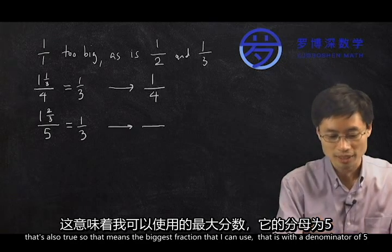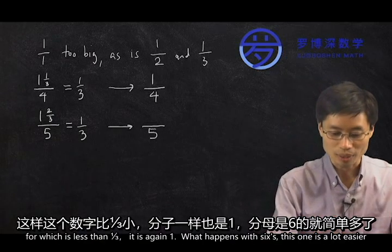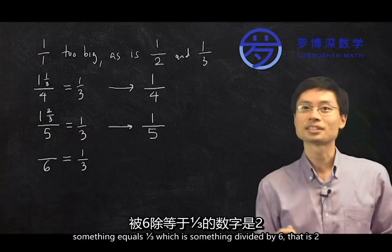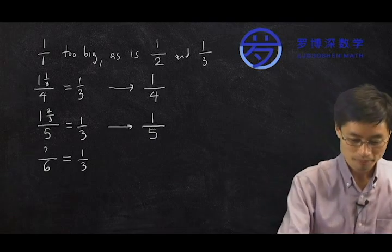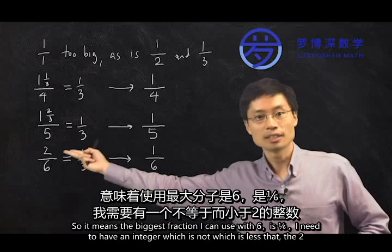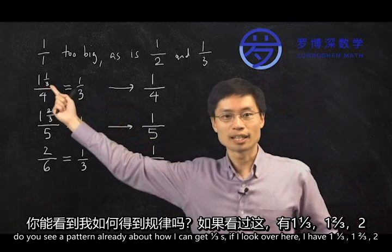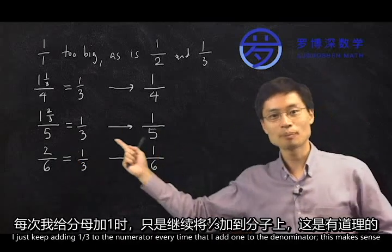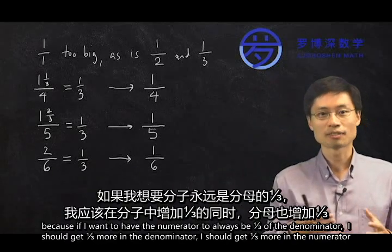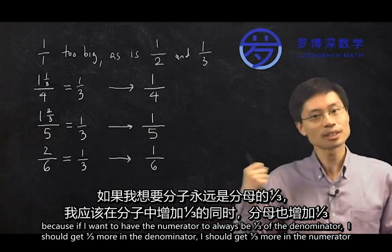So the biggest fraction with a denominator of five that is less than one-third is again one. Do you see a pattern? The top is increasing by one-third every time the bottom increases by one. This makes sense, because if I want the numerator to always be one-third of the denominator, if I get one more on the denominator, I should get one-third more in the numerator. This lets me write down a different sequence — a whole bunch of numbers that are equal to one-third.